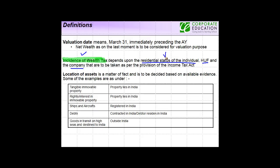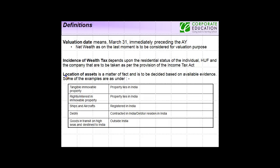How this impacts each one of them we are going to see in detail. But in so far as incidence is concerned, it is affected by the residential status of various categories of people. The third definition is location of the asset.